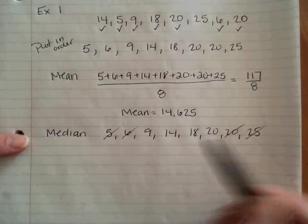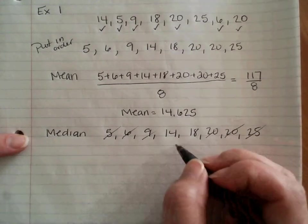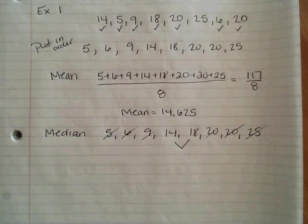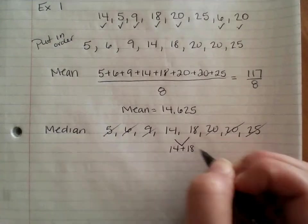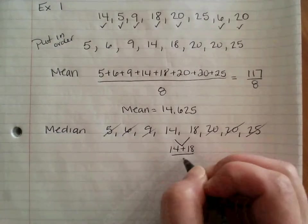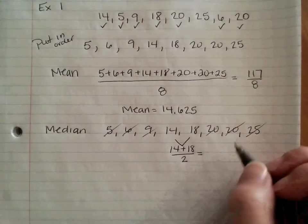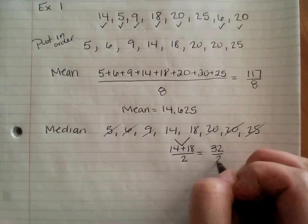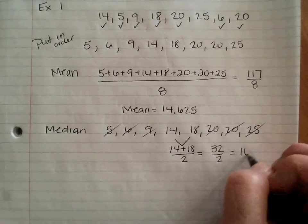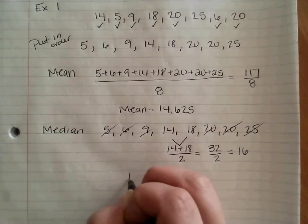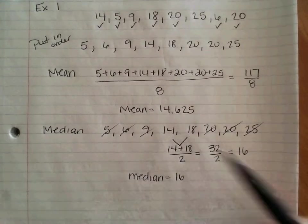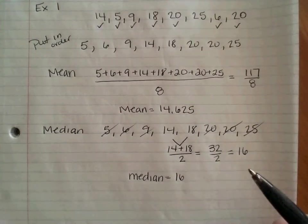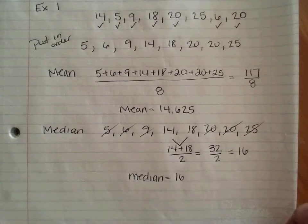So I'm going to cross out the lowest, highest. Next, next, next, next. I have two numbers in the middle. You can have two numbers in the middle. What you need to do is find the middle of those two. So we find the average. So I'm going to add them, 14 plus 18. And since I only have two numbers, I'm going to divide by two. So 14 plus 18 is 32. Divided by two means that I get an answer of 16. So my median, my middle number is 16. The middle of 14 and 18 is 16.